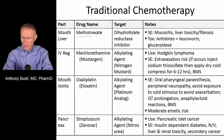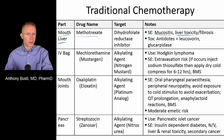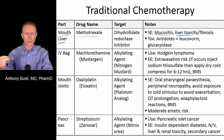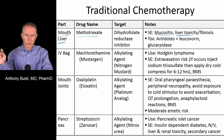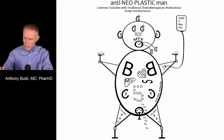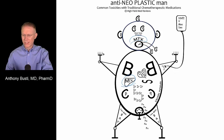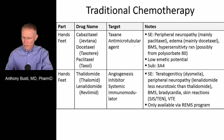Moving on to methotrexate — this is reflected by the liver and the mouth. The mouth, because of the risk of mucositis; the liver, because of liver fibrosis and toxicity. This drug targets the enzyme dihydrofolate reductase, preventing folate from being converted to dihydrofolate and then tetrahydrofolate, which is necessary to transfer the methyl group when making pyrimidines and purines for cellular replication. On antineoplastic man, methotrexate affects the liver, and mucositis forms around the mouth, especially at the higher doses used in chemotherapy.